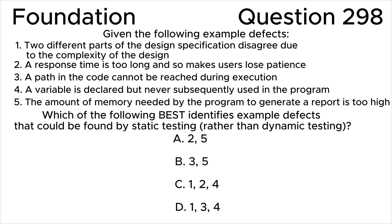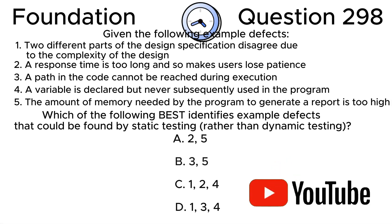Which of the following best identifies example defects that could be found by static testing rather than dynamic testing? A) 2,5  B) 3,5  C) 1,2,4  D) 1,3,4. Take a moment to subscribe to my channel and hit the bell icon.